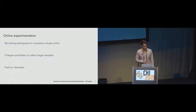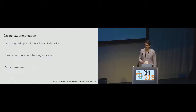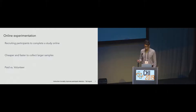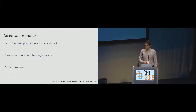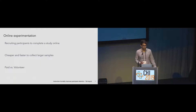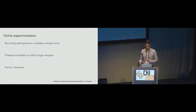Now, there are two flavors of online experimentation: paid and volunteer. Paid experiments are as you would expect — you pay participants a small amount of money to take your study. A common platform where researchers run paid online studies is Amazon Mechanical Turk. Volunteer online experiments incentivize participation by drawing on participants' intrinsic motivations, such as their desire to support science or to learn something new about themselves. These experiments also usually offer some sort of performance feedback or comparison to others at the end to further incentivize participation.